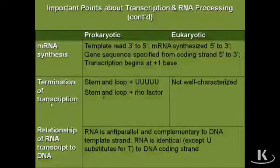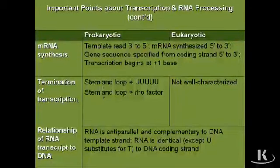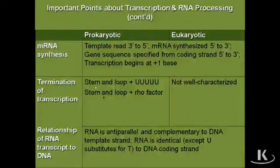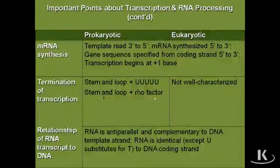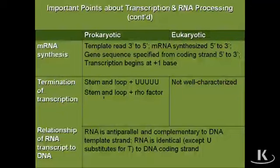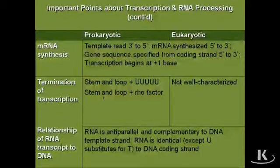Moving on to how transcription is terminated: in prokaryotes, there tends to be a stem loop sequence, maybe a poly-U region, or a stem loop sequence and a rho factor, depending on the gene. In eukaryotes, this is not well characterized — so that's one less thing for you to remember.